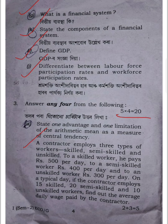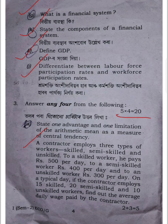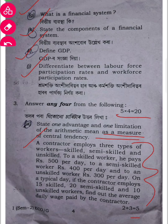On a typical day, if the contractor employs 15 skilled, 20 semiskilled, and 10 unskilled workers, find out the average daily wage paid by the contractor. This question carries 5 marks and there are 3 marks as well, so overall 5 marks for the question.